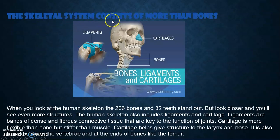The skeletal system consists of more than bones. When you look at the human skeleton, the 206 bones and 32 teeth stand out, but look closer and you'll see even more structures. The human skeleton also includes ligaments and cartilage. Ligaments are bands of dense, fibrous connective tissue that are key to the function of joints. Cartilage is more flexible than bone but stiffer than muscle, and it helps give structure to the larynx and nose.